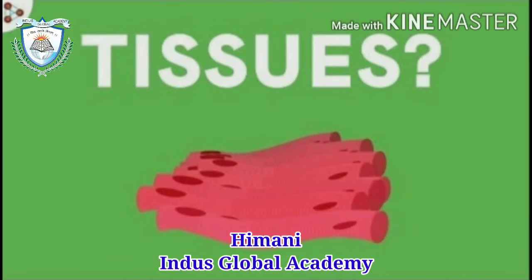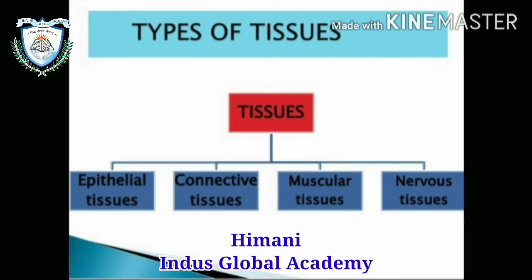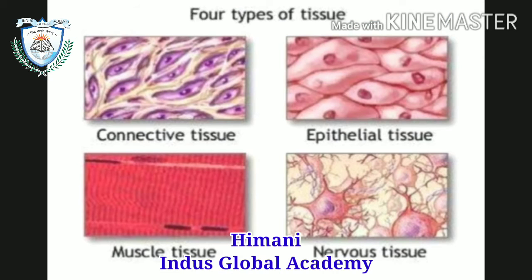Hello students, welcome to my next lecture — Grade 9, Chapter 2, topic: Tissue. Today we will discuss animal tissue. As I mentioned, there are four types of animal tissue: first, epithelial tissue; second, connective tissue; third, muscular tissue; and fourth, nervous tissue. Today we will discuss epithelial tissue and its types.